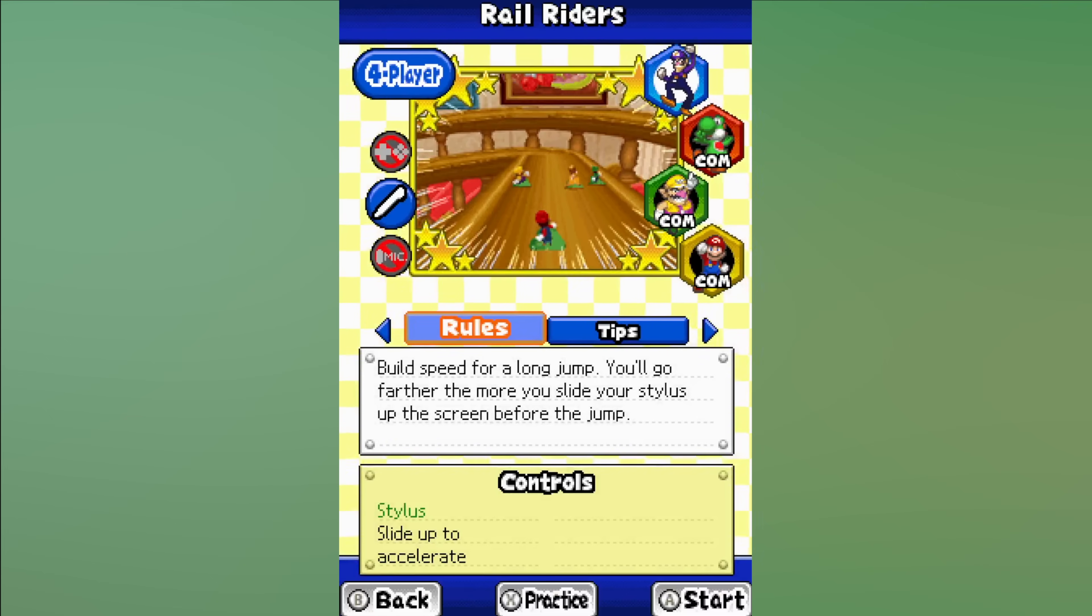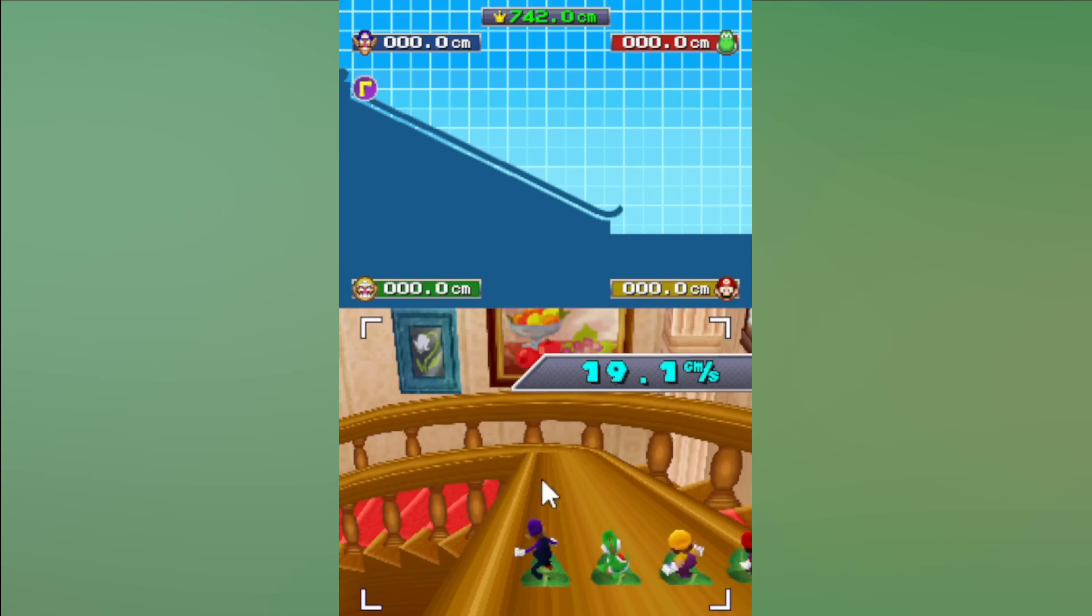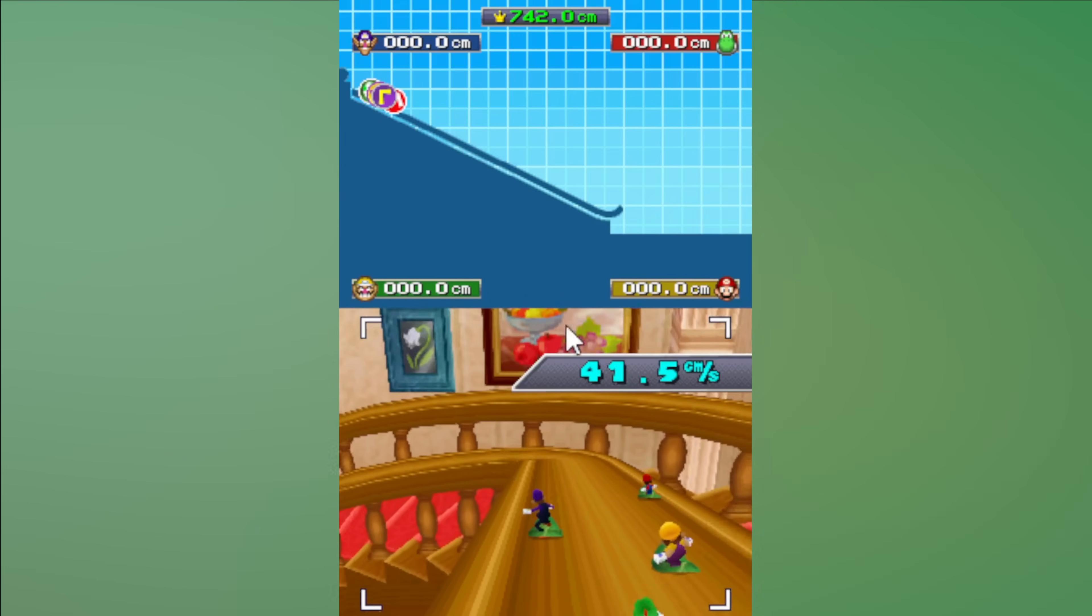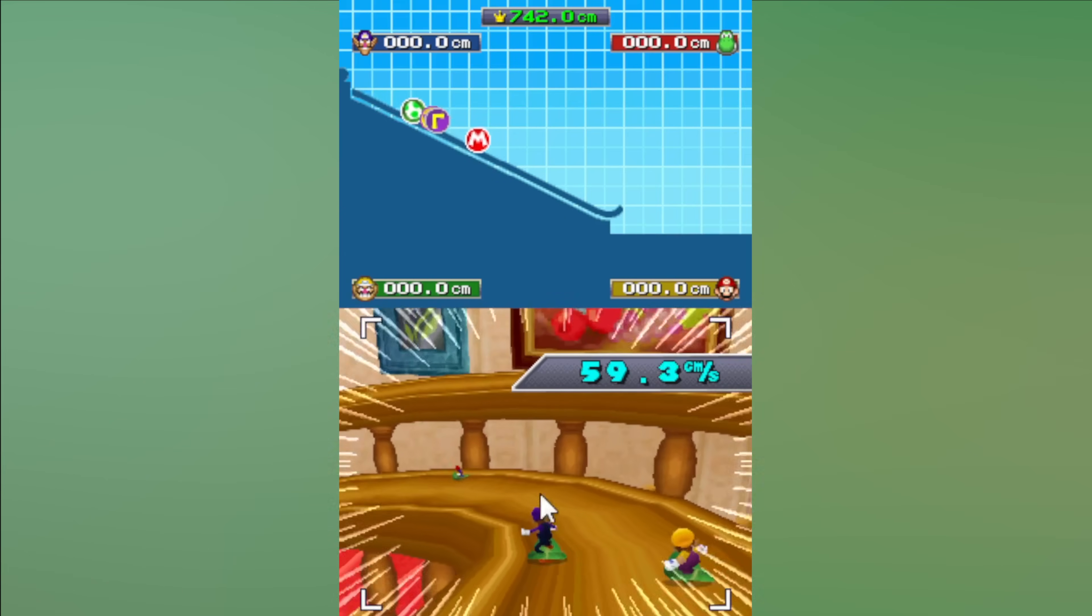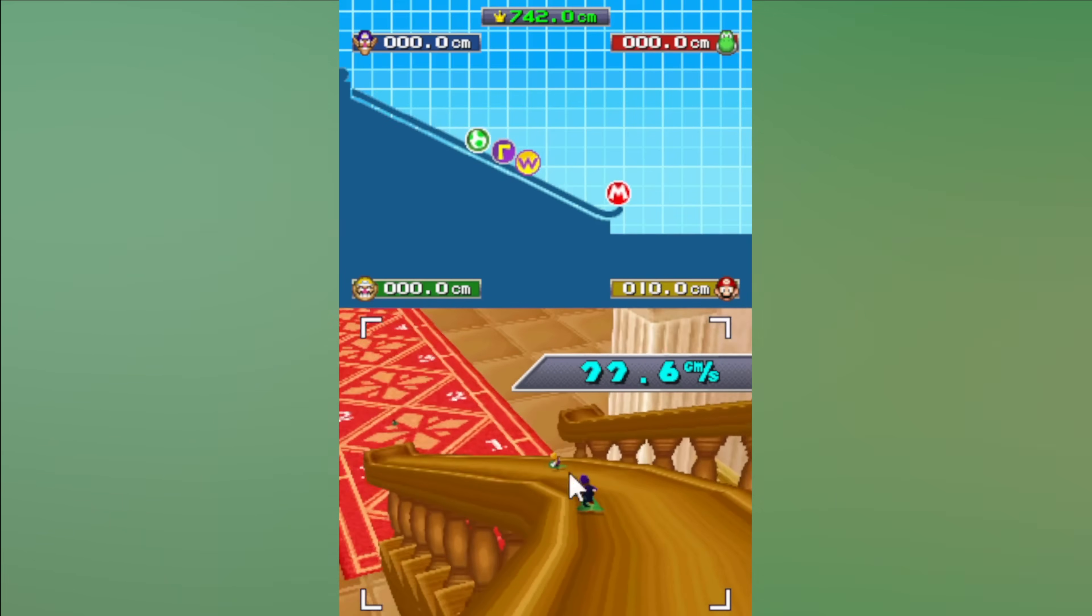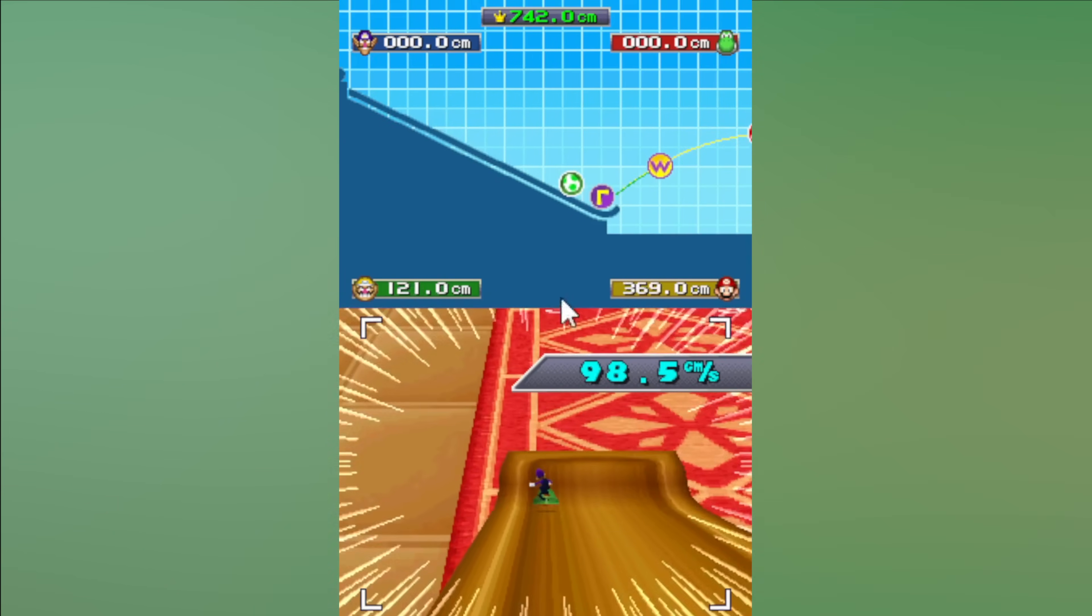I'll finish the video off with a simple one that you guys were looking forward to. In Rail Riders you have to drag the stylus from the bottom of the screen to the top to build up speed. Each dragging motion will increase your speed while you're on the rail and the goal is to fly as far as possible.